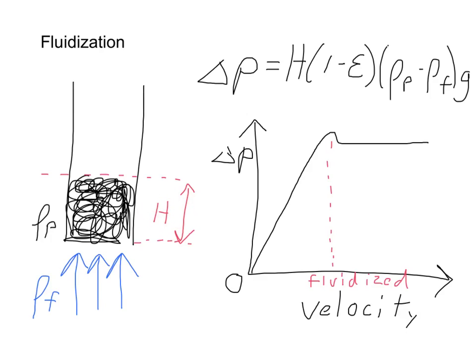From the information in the equation in the upper right here, from the density difference between the particles and the fluid, the effects of gravity, the height of the bed, and then the voidage, epsilon being the voidage of the particles, we should be able to calculate the pressure drop delta p across that fluidized bed.